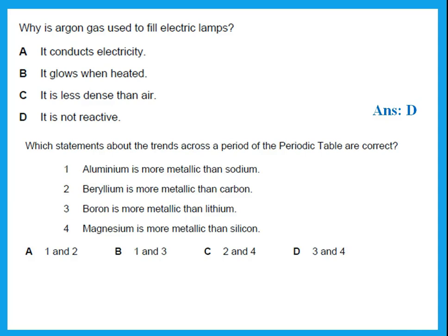Which statements about the trends across a period in the periodic table are correct. So he's comparing these different elements. Aluminium, beryllium, boron, magnesium. Aluminium is more metallic than sodium. Is that correct? No. We said group 1 is more than group 2, more than group 3. Aluminium is in group 3, so it's actually less metallic. Not more metallic.